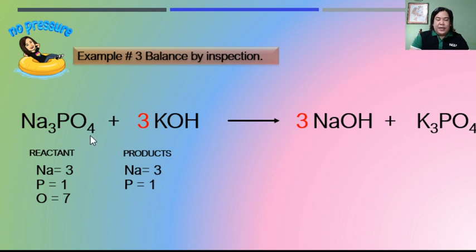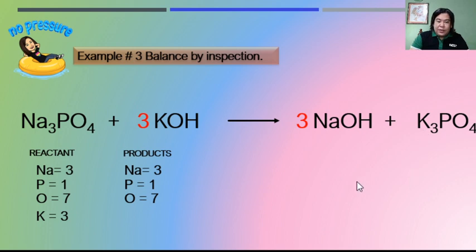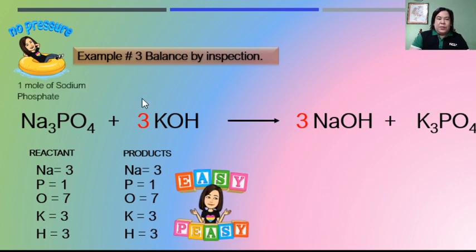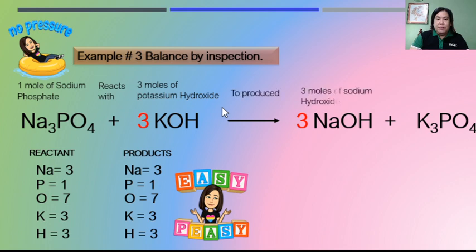Now place a coefficient of three before potassium phosphate on the product side as well. Let us check: sodium — three in the reactant, three times one equals three in the product. Phosphorus — one in the reactant, one in the product. Oxygen — four plus three times one equals seven in the reactant; three plus four equals seven in the product. Potassium — three times one equals three in the reactant, and three in the product. Hydrogen — three in the reactant, three in the product. This equation is balanced. We read this as: one mole of sodium phosphate reacts with three moles of potassium hydroxide to produce three moles of sodium hydroxide and one mole of potassium phosphate.